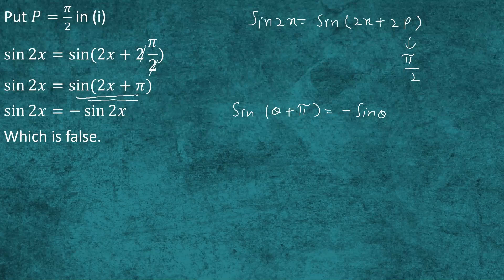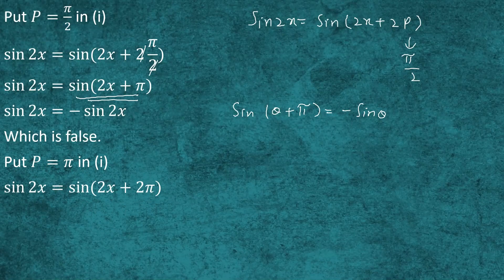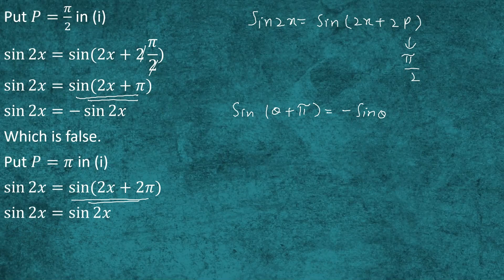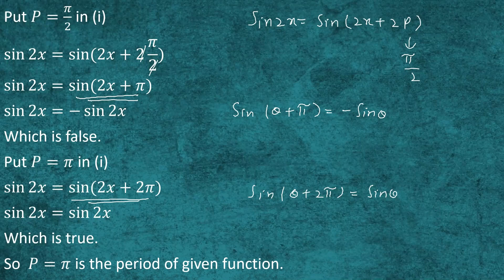Next we check p = π. Substituting into expression 1: sin 2x = sin(2x + 2π). The right-hand side equals sin 2x since sin(θ + 2π) = sin θ. This is true, so the function repeats itself when p = π. Hence p = π is the least period of the given function.